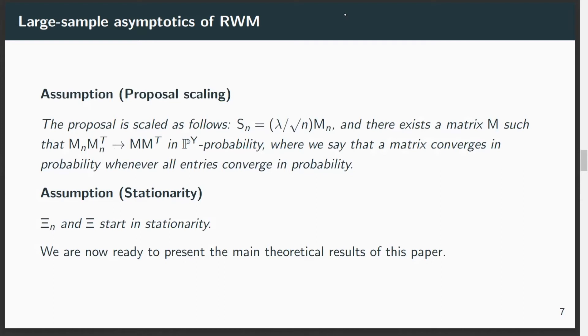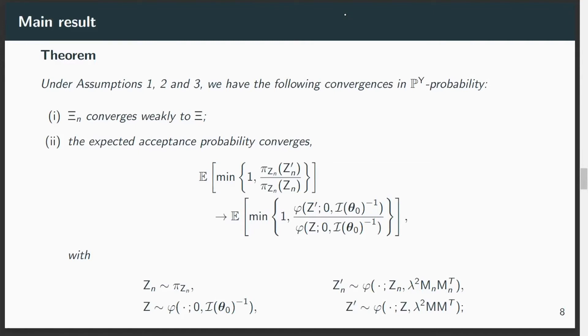In order to match this shrinking covariance matrix of the target, we also need to adjust the proposal. This is not a surprise, and also to make our mathematics a little bit easier, we will assume that the other chains start at stationarity. And this leaves us with our main result.